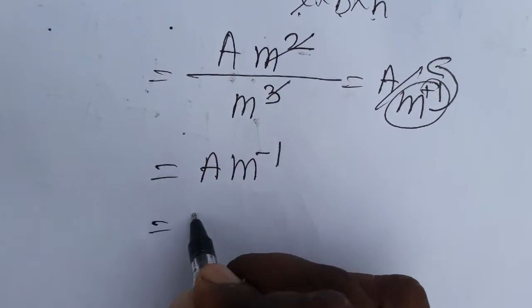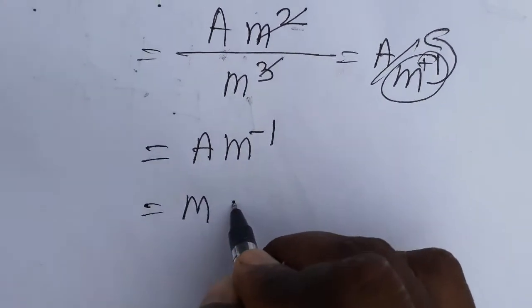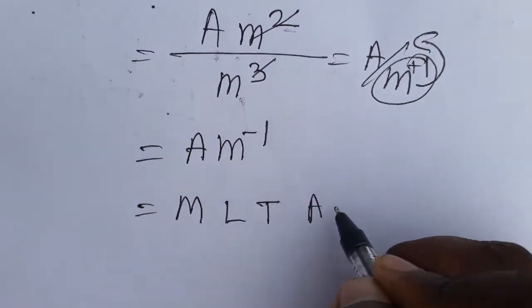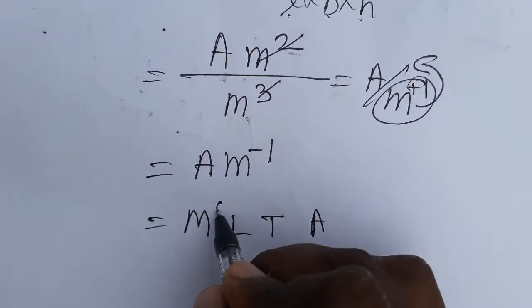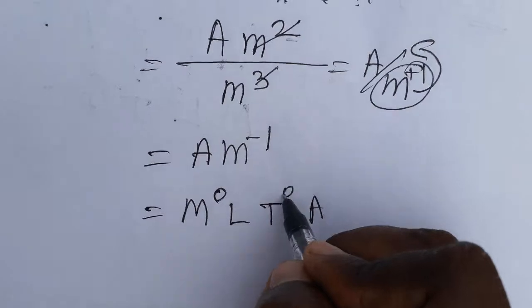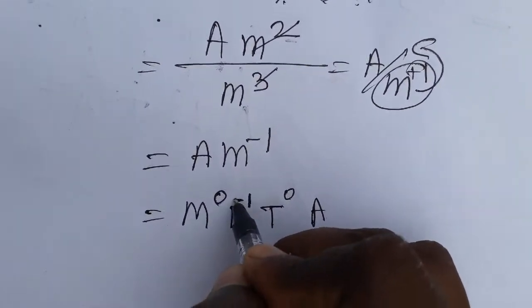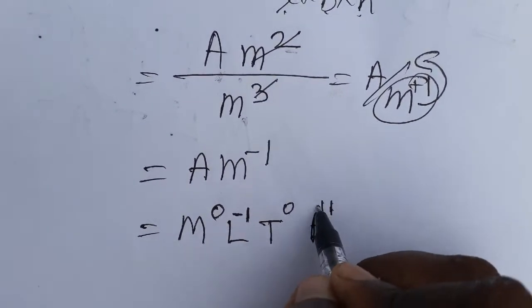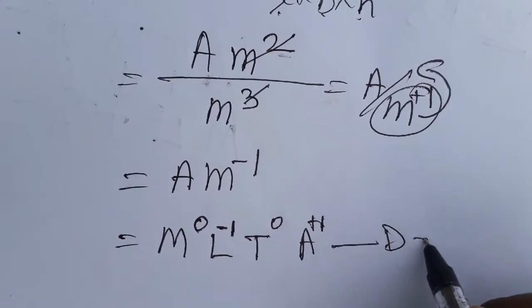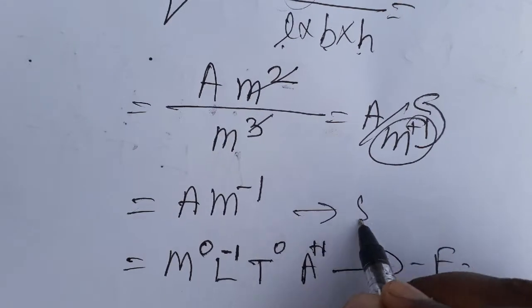So we got the dimensional formula. Dimensional formula is always M L T A like that, this only you can write. There is no mass here, there is no time here, only length is there which is L minus 1, and the current is there plus 1. So we got dimensional formula and SI unit. Thank you.